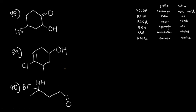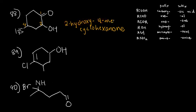Now let's look at cyclic examples. In example 88, we assign number 1 to the highest-ranking functional group. We have a ketone, an alcohol, and a thiol. Among those three, ketones win, so we give the ketone carbon number 1, making the other positions 2, 3, and 4. Since the ketone is highest-ranking, we use the suffix -one. The parent is cyclohexane, giving cyclohexanone. At position 2 we have OH — prefix hydroxy — and at position 4 we have SH — prefix mercapto. The full name is 2-hydroxy-4-mercaptocyclohexanone.